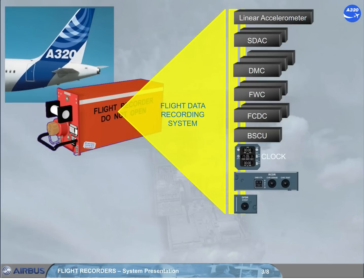It can be manually started with the ground control push button installed on the RCDR panel. Note, it is energized by the normal AC power.